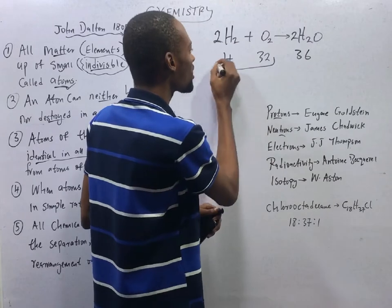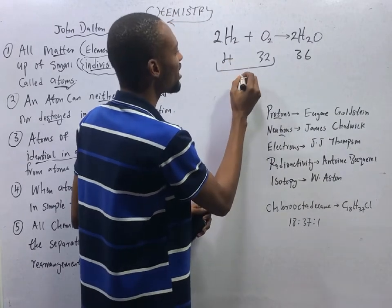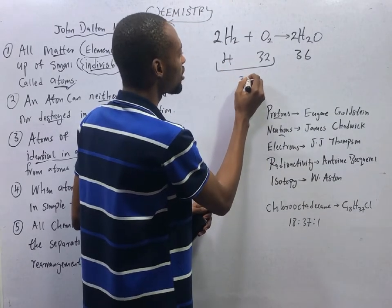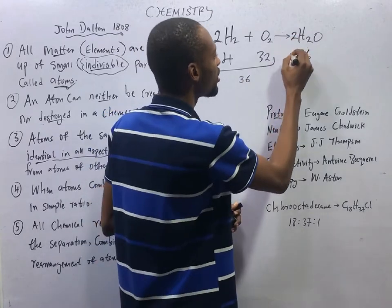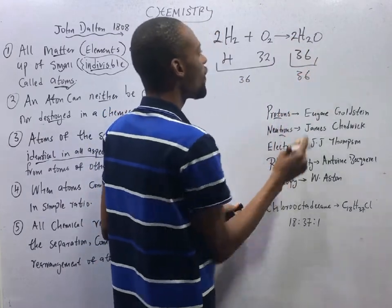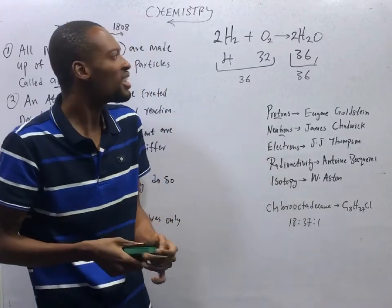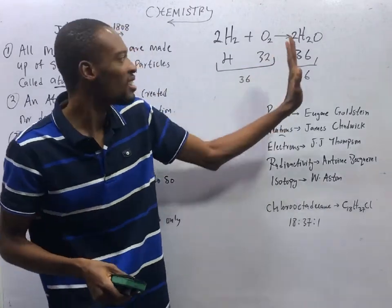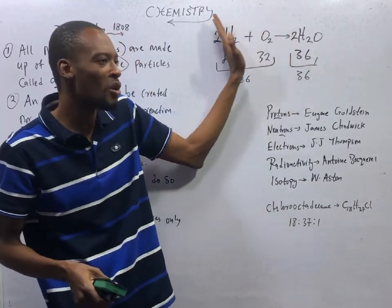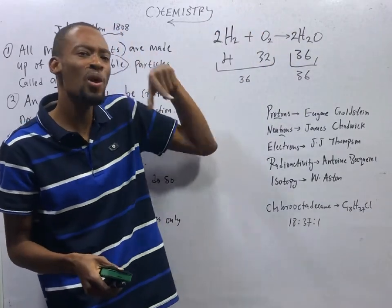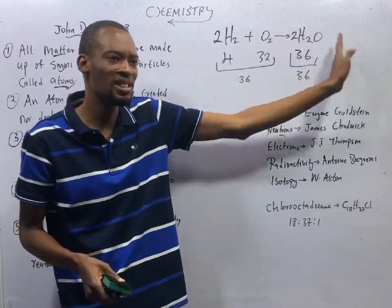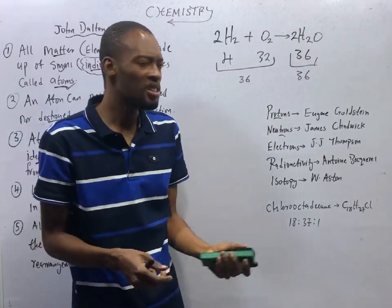So in the reactant part, you see that here equals 36. Product here is 36. Mass is not created. And this helps in balancing of equation. Any equation, chemical equation that is balanced, if you add the mass of the element or compound in this side, it must be equal to the mass of the element or compound in this side. It is not created. It is conserved.